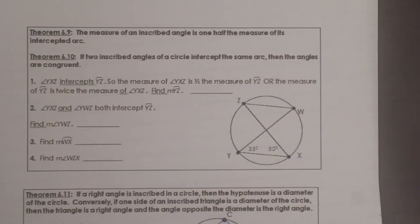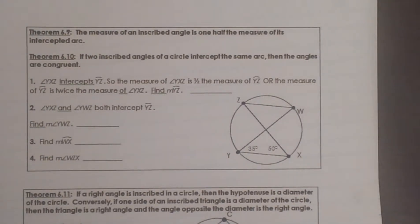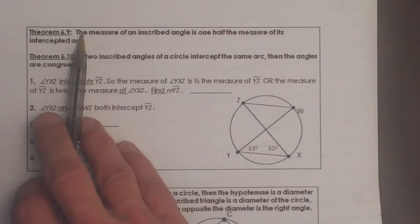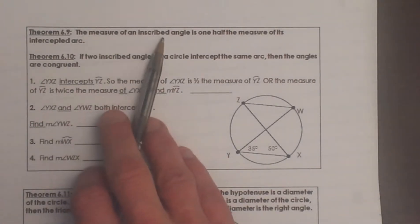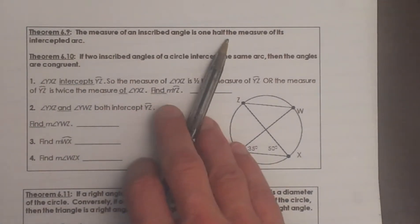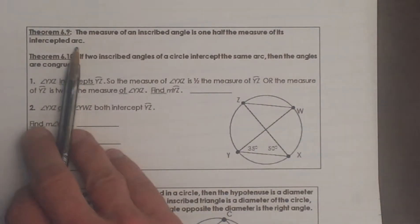Hello. Welcome to Moo Moo Math. Today we are going to look at inscribed angles. We are going to look at two theorems. The first one says the measure of an inscribed angle is half the measure of its intercepted arc.